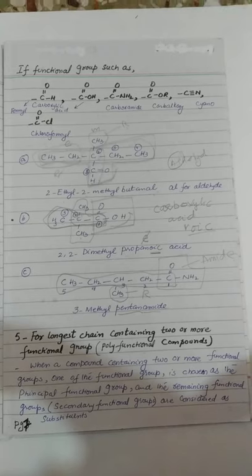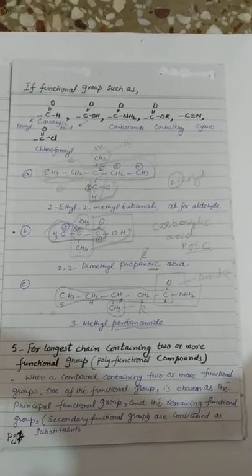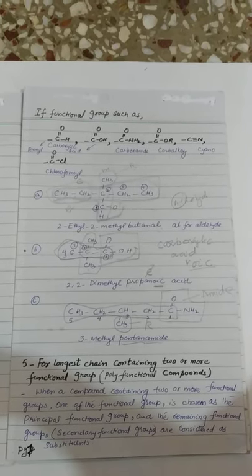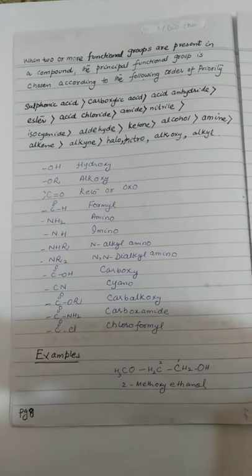Number 5 rule है: for longest chain containing two or more functional groups — means poly-functional compound. When a compound contains two or more functional groups, one of the functional groups is chosen as the principal functional group and the remaining functional groups (secondary functional groups) are considered as substituents। इसका मतलब यह है कि अगर कोई compound है जिसमें एक से ज़्यादा functional group है, तो हम एक functional group को principal functional group लेते हैं और दूसरे को substituent के तौर पर consider किया जाता है। Priority किस तरह से set करेंगे — when two or more functional groups are present, the principal functional group is chosen according to the following order of priority।